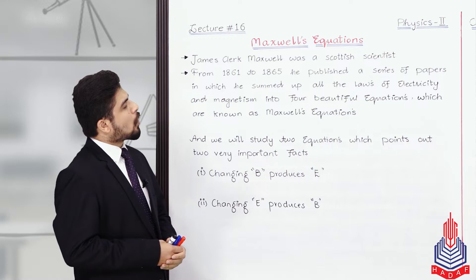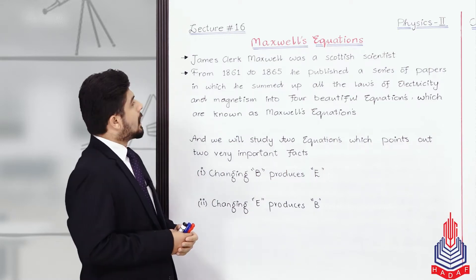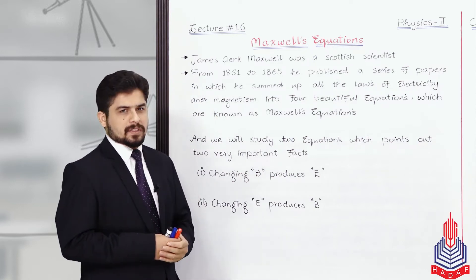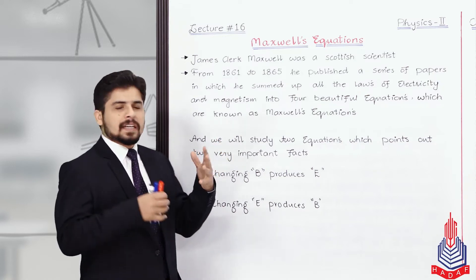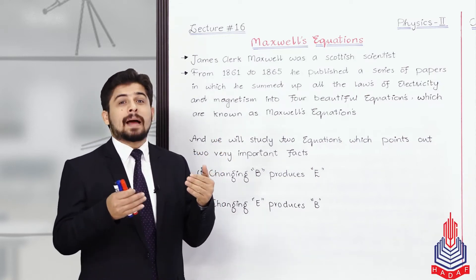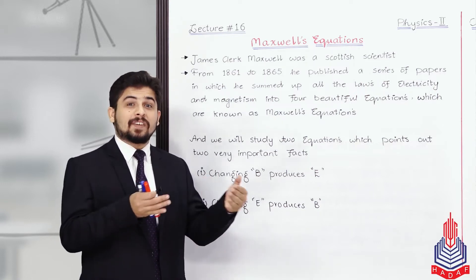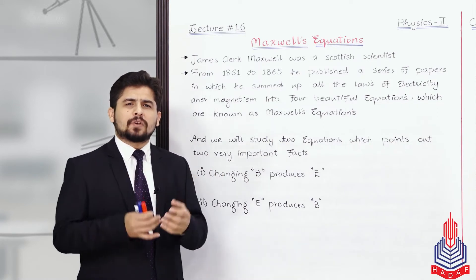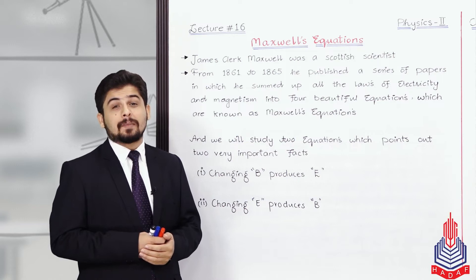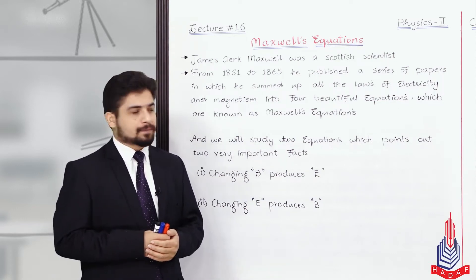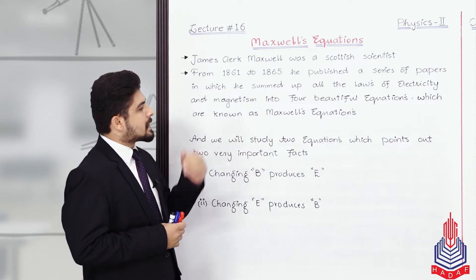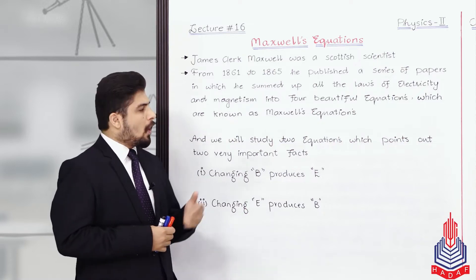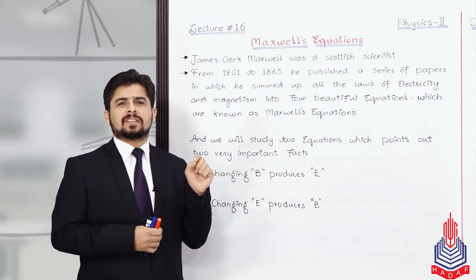Maxwell was actually a Scottish physicist and mathematician. From 1861 to 1865, he published a series of papers in which he summed up all the laws related to electricity and magnetism at that time — the individual laws — and converted them into four very beautiful equations, which we today know as Maxwell equations. Out of those four equations, we will study two in detail, which will give us two very important results.